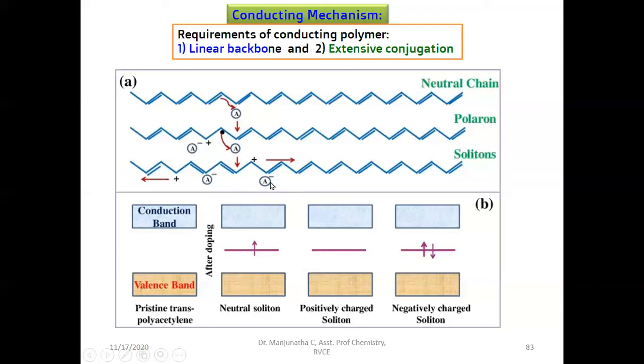Two positive charges are created, di-cations. Two charges are created and they are moving away from each other. They are called solitons. This is the band gap of polyacetylene. After doping, meaning after adding electron, there is creation of intermediate energy levels between conduction band and valence band, and this electron can easily move to the conduction band and hence it conducts electricity.